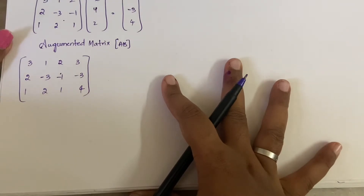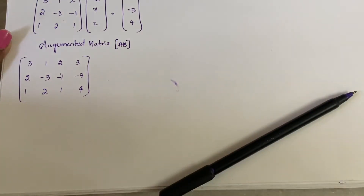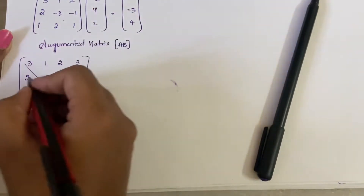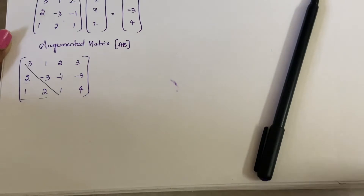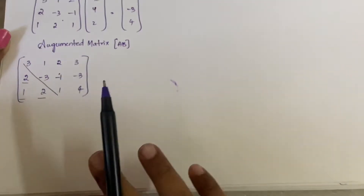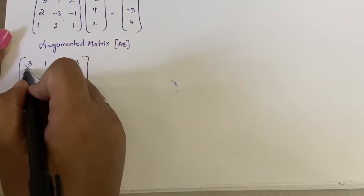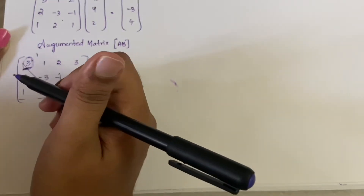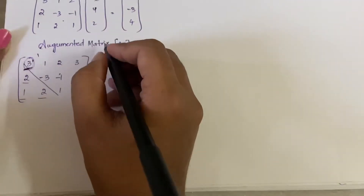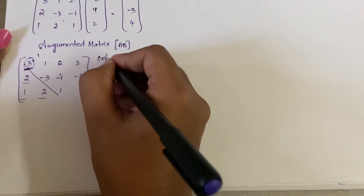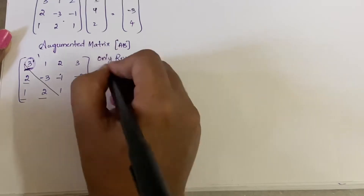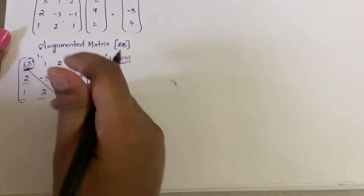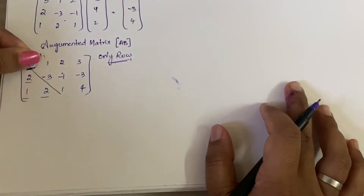Now what we have to do is bring it to echelon form. Echelon form means you need to identify the diagonal — all elements below the diagonal should be made zeros. For that, the first element of the first row should be 1, which makes it convenient. In echelon form we only do row operations, not column operations. So we cannot interchange C1 and C2 — instead we need to interchange R1 and R3 so that the 1 comes to the top.